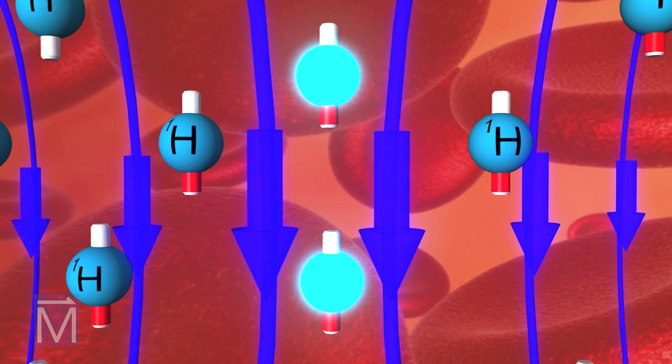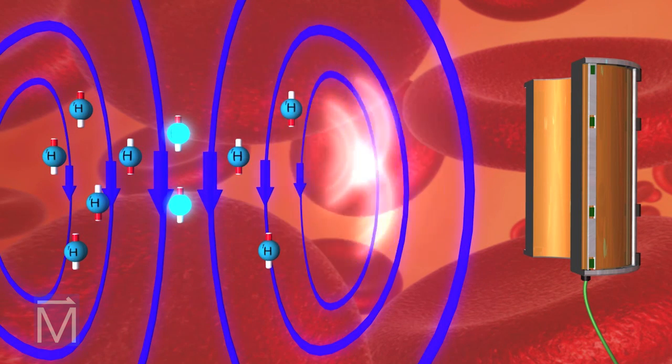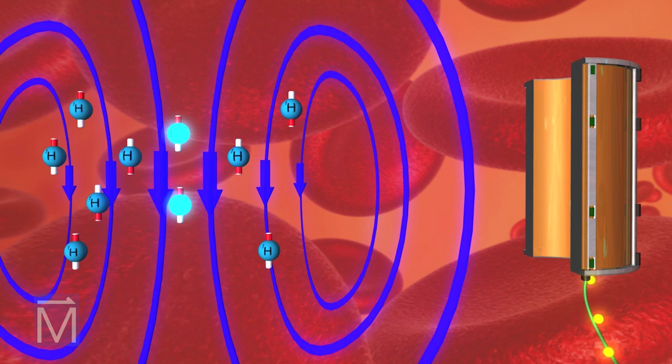When the RF pulse stops, the protons release that absorbed energy, return to their previous alignments, and, in so doing, emit a signal back to the coil.